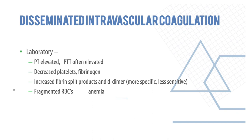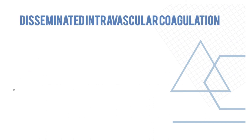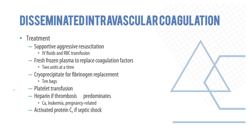Lab findings in DIC also include decreased platelets and fibrinogen, increased fibrin split products and D-dimers, fragmented RBCs, and anemia. Treatment: IV fluids and blood transfusion; fresh frozen plasma to replace coagulation factors; cryoprecipitate for fibrinogen replacement; platelet transfusion as needed. Heparin may be needed if massive thrombosis is the predominating factor. Activated protein C may be required if there is septic shock.